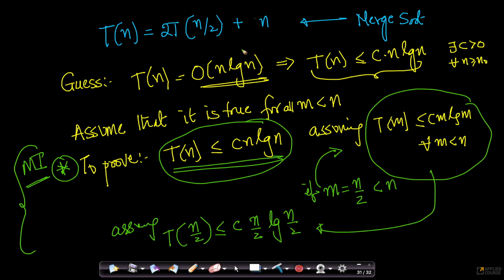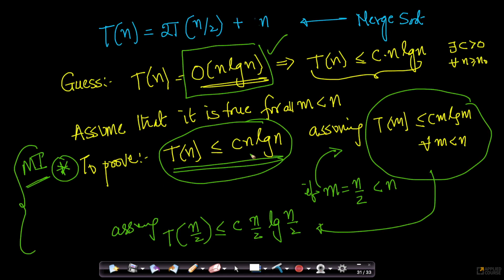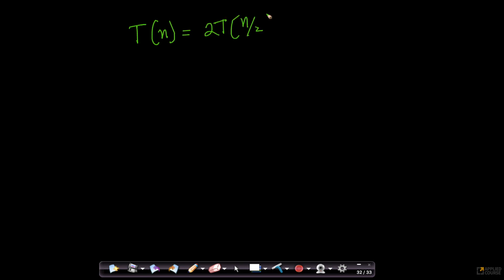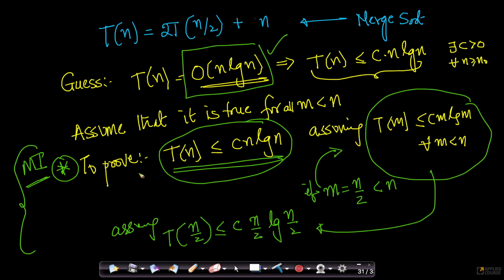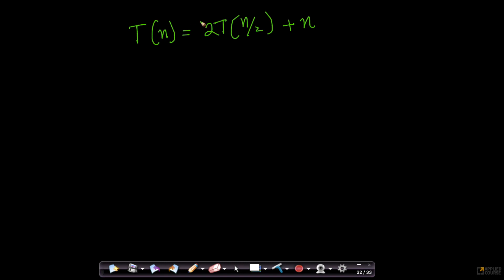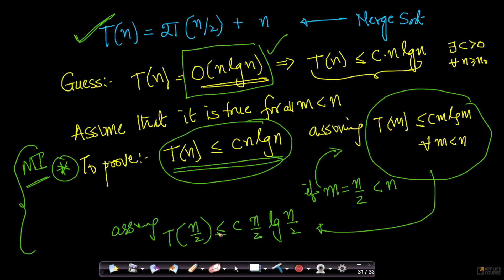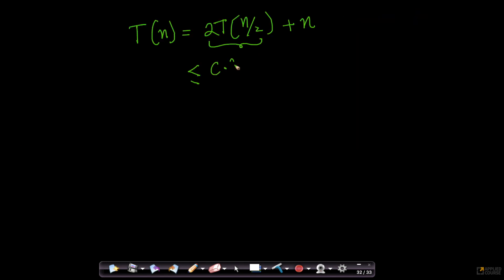So let us go step by step. We need to prove T(n) ≤ c·n·log n, assuming T(n/2) ≤ c·(n/2)·log(n/2). The actual recurrence relation is T(n) = 2T(n/2) + n. I will replace T(n/2) with the inequality, so the whole thing becomes less than or equal to 2·c·(n/2)·log(n/2) + n.